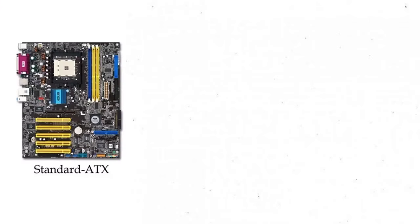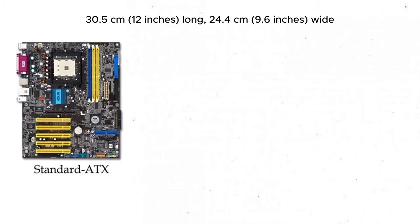Now let's dive into the different types of motherboards. First, let's talk about the ATX motherboard. This is the most common type and is widely used in desktop computers. Measuring 305 by 244 mm, ATX motherboards offer plenty of space for a variety of components. They usually include several PCIe slots for graphics cards, RAM slots, and numerous connectors for peripherals like USB and Ethernet. The ATX is known for its versatility, making it compatible with a broad range of cases and components, whether you are building a gaming rig or a work PC.